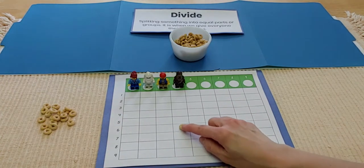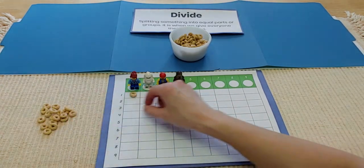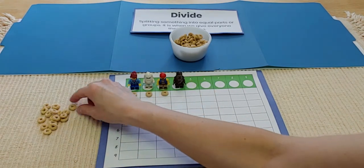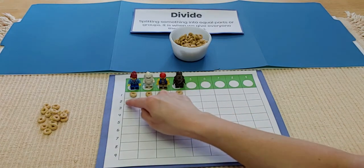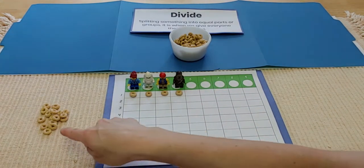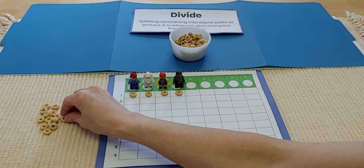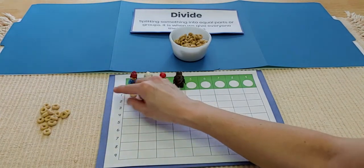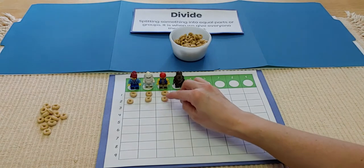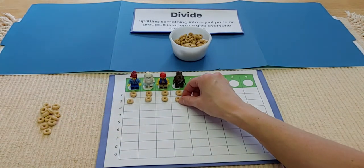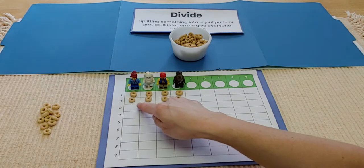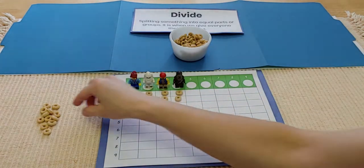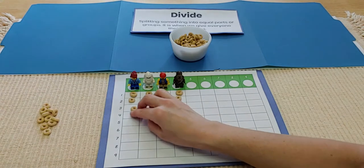I'm going to start out by putting one in each row. I want to start by sharing one Cheerio with each of my friends. And so far, everyone has the same amount. I can keep going because my pile is still pretty full.